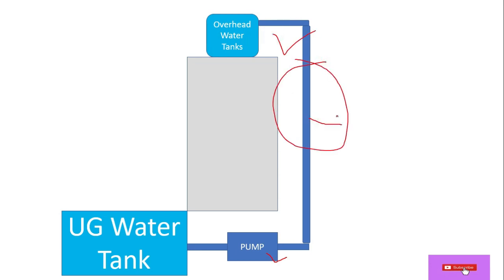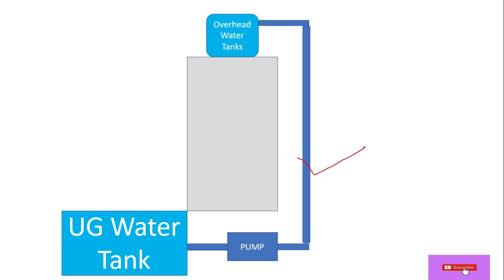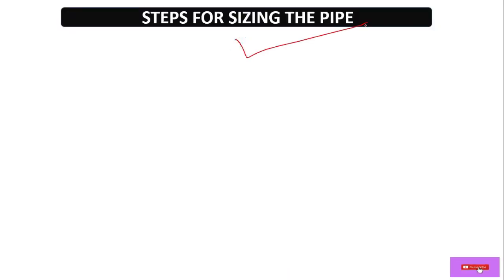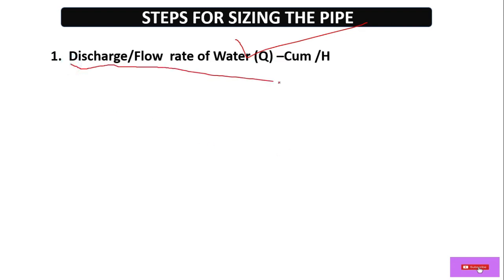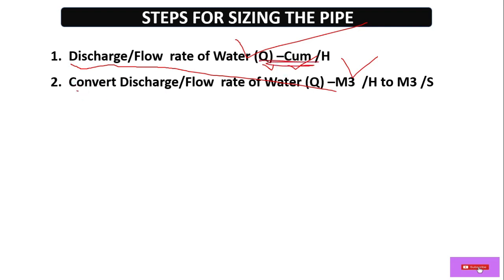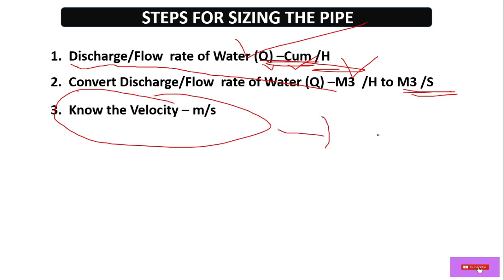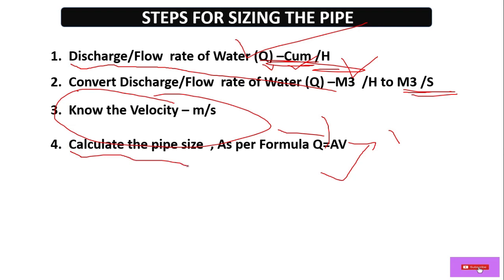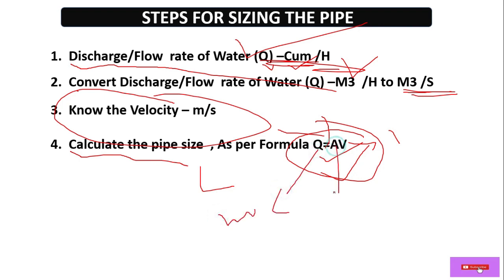This is the pipe from the pump to the overhead tank, and we are going to calculate the pipe diameter — the pipe size. To calculate the pipe size we follow some steps: first, know the discharge or flow rate Q in cubic meters per hour; then convert to cubic meters per second; then know the velocity of the water flowing through the pipe; and finally calculate the pipe size using the formula Q = AV, where Q is discharge, A is the cross-sectional area, and V is the velocity.